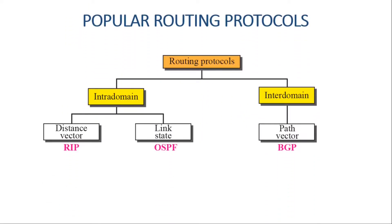Now let us see some popular routing protocols. Routing protocols are divided into two parts: intra-domain and inter-domain. Within intra-domain we have two types: distance vector routing protocol and link state routing protocol. In inter-domain we have only one: the path vector protocol.